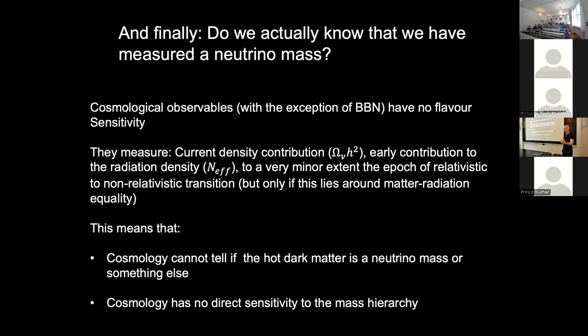Let's think about what we're actually measuring. If Euclid in a few years comes out with a detection of neutrino mass, the question is: what are we actually measuring? We're measuring something that looks like a neutrino — something that contributes to the cosmic energy density with a mass presently and contributed relativistic energy density early on. But we cannot strictly exclude that we're seeing something else, like a light axion, for example. And it's actually impossible to measure neutrinos directly.